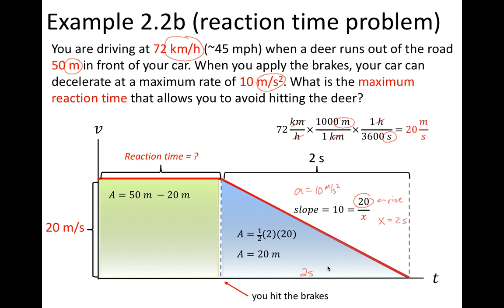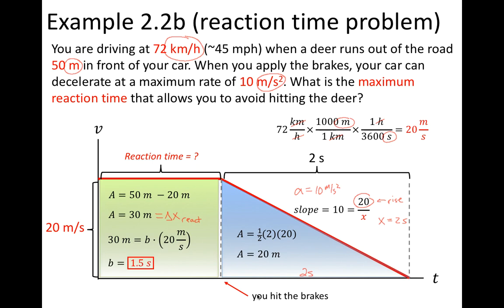Bringing that 20 meters over, the area of the rectangle is 50 minus 20, which is 30 meters. That 30 meters is the distance we can travel during the reaction time. Since area equals base times height, and the height is 20 m/s and the area is 30 meters, the base works out to 1.5 seconds. That base is the reaction time. This demonstrates how the slope of the graph gives acceleration and the area under the curve gives displacement or distance traveled.